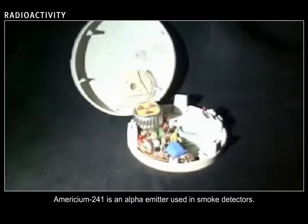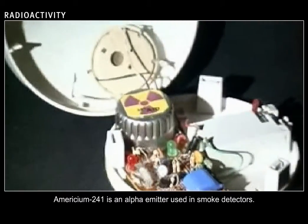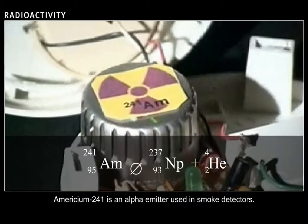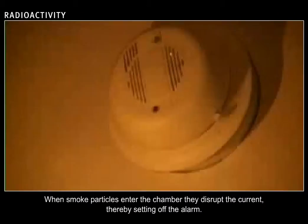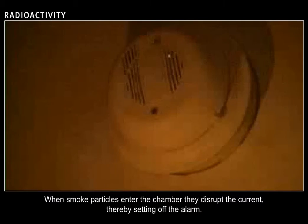Americium-241 is an alpha emitter used in smoke detectors. The alpha particles ionize air molecules in a chamber, producing a tiny current, which is sensed by the detector. When smoke particles enter the chamber, they disrupt the current, thereby setting off the alarm.